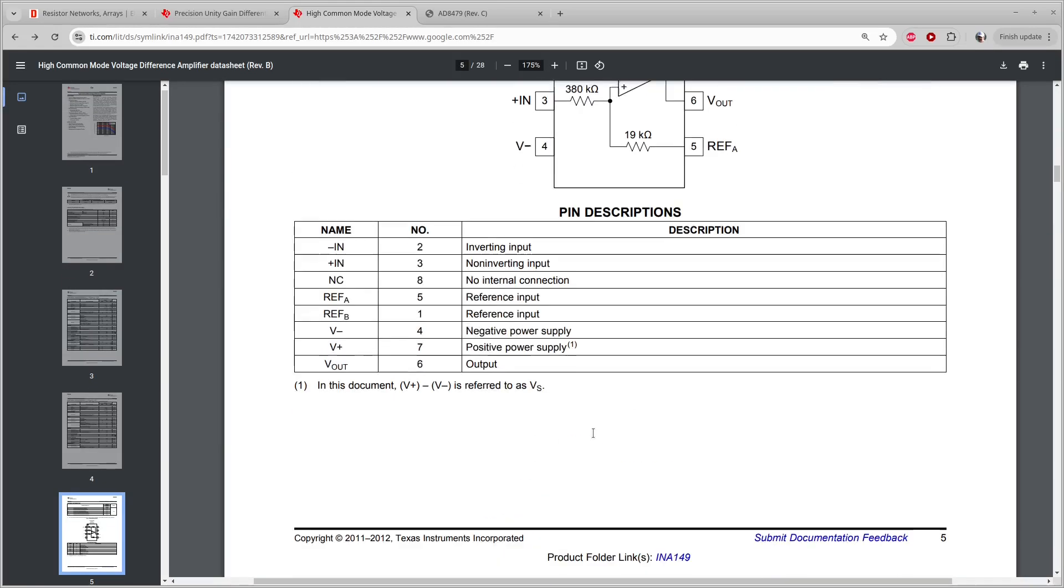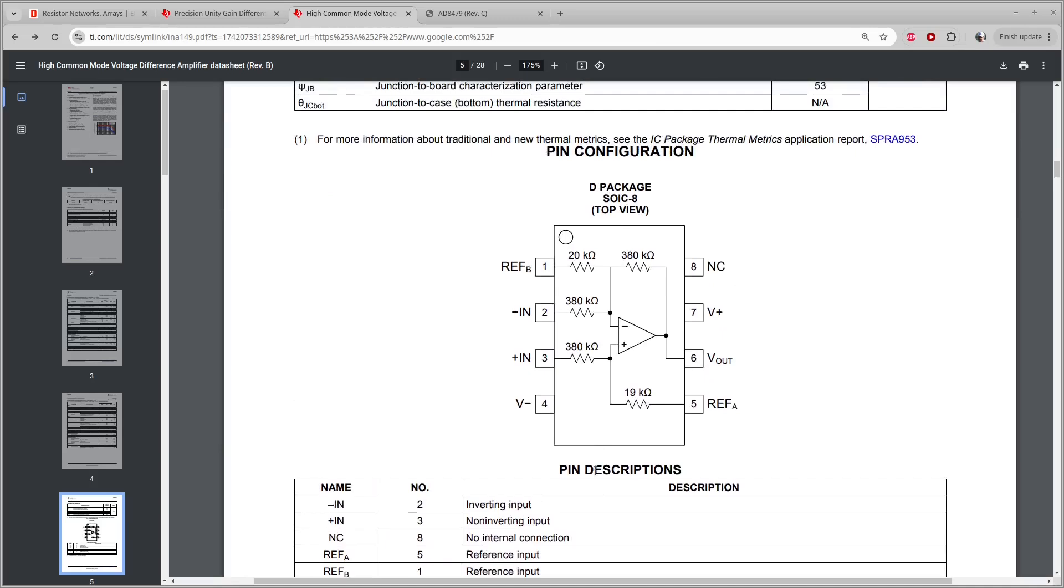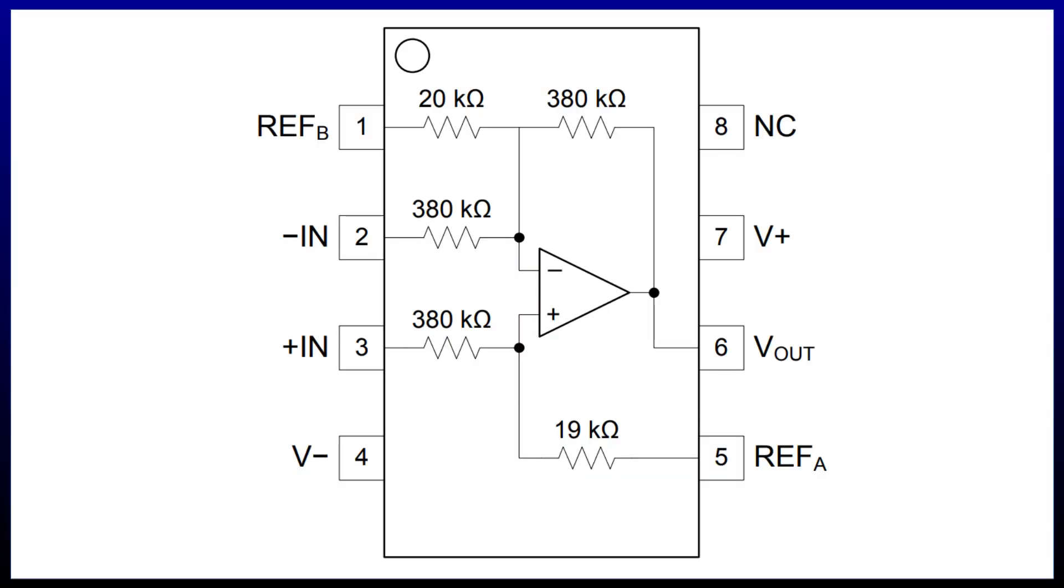It's kind of interesting to see how it works. For split supply operation, ordinarily you'll ground both reference pins. That'll make the voltage at the non-inverting input of the op-amp be the voltage at pin 3 times the divider ratio, which is 1 over 21.